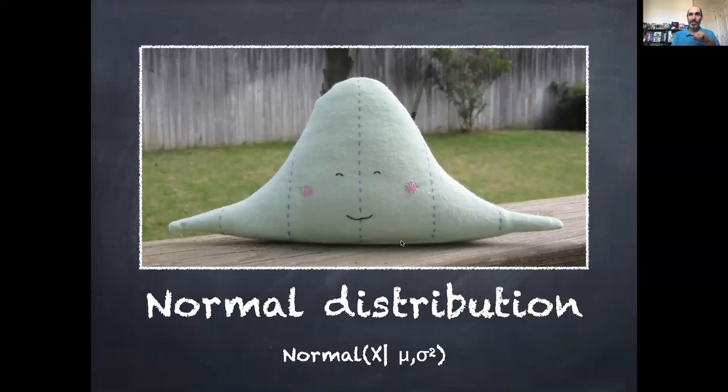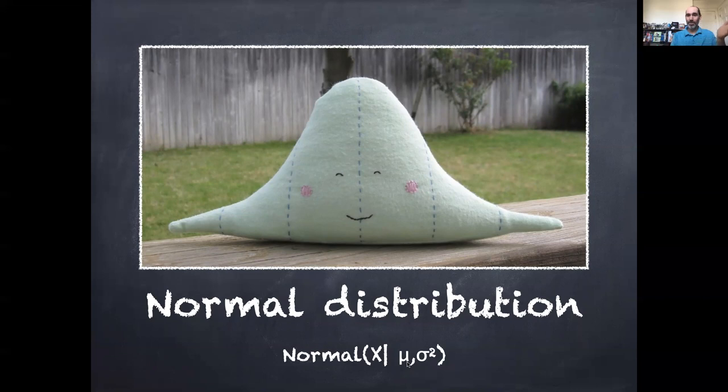The other distribution we see a lot for continuous variables, probably the most common continuous distribution, is the normal distribution, which I'm sure we've all seen before - the bell curve. There's a normal density for the random variable X described by two parameters: a mean and a variance, or a mean and a standard deviation. There are literally scores and scores of different probability distributions out there that each make subtly different assumptions, both discrete and continuous, that are used for different purposes. But these ones we've covered so far like binomial, normal, Poisson, uniform are probably some of the most common ones you're likely to encounter.